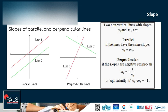Let's proceed to the conditions of slopes of parallel and perpendicular lines, starting with parallel lines. When we say parallel lines — two lines that do not intersect — it means they have the same slope. So the condition is: if the two lines are parallel, they have the same slope. In other words, if the slopes of two equations are the same, then the lines are parallel.